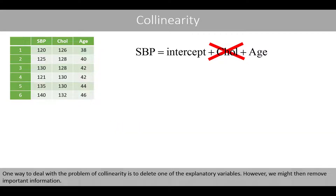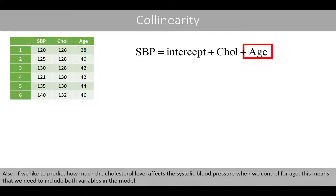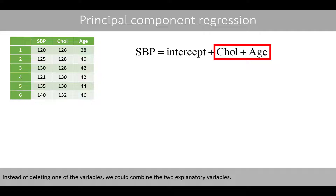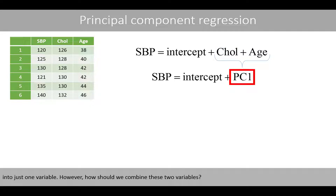One way to deal with collinearity is to delete one of the explanatory variables. However, we might then remove important information. Also, if we'd like to predict how much cholesterol level affects blood pressure when controlling for age, we need both variables. Instead of deleting one, we could combine the two explanatory variables into just one variable.